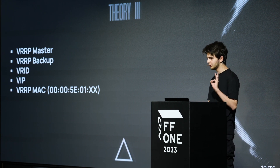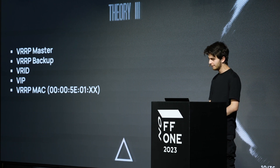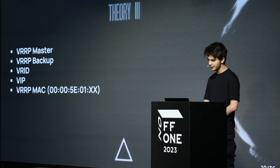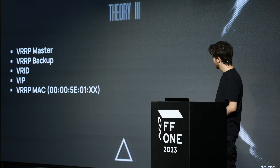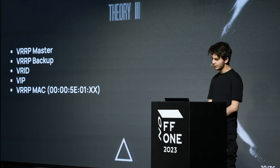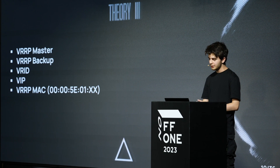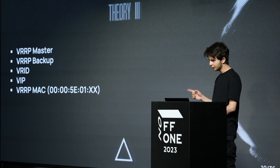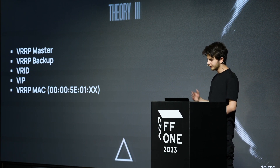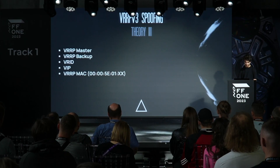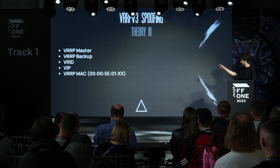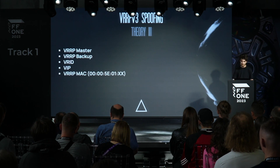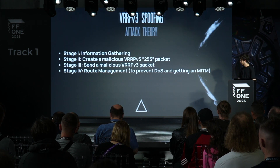VRID is just an identifier of the logical group — it has a digital ID. VIP is the virtual IP address assigned to the logical virtual router, and the master is responsible for it. VRRP MAC is the virtual MAC address of the virtual router, where the last two hex digits represent the VRRP group number.